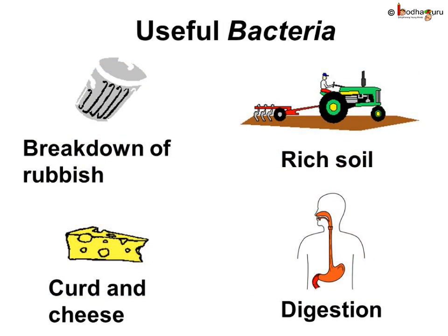Some bacteria help us in our everyday life, like turning milk into curd. Saprophytic bacteria break down dead decaying plants and animals into the smallest and simplest particles, which get back to the soil, thus cleaning the environment and also making the soil richer. Some bacteria in our body also help in digestion of food.